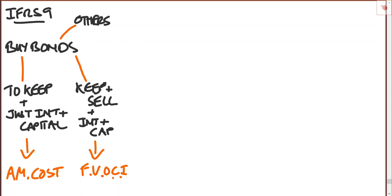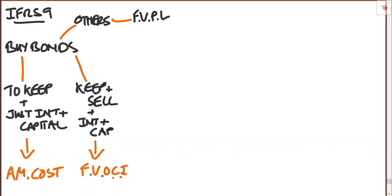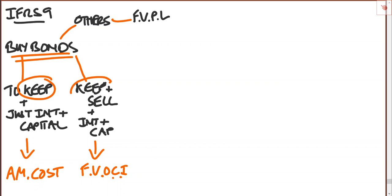Others will go fair value through profit and loss — essentially those are ones that are going to be held for sale, because if you're not going to keep them, you're going to sell them. If you intend to sell them: fair value through profit and loss. Remember, these fair value ones are remeasured each year, with the gain or loss going to OCI for fair value through OCI, or to profit and loss for fair value through profit and loss. So when buying bonds, the key thing is to determine your business model: are you going to keep them, keep some and sell some, or pretty much sell them?